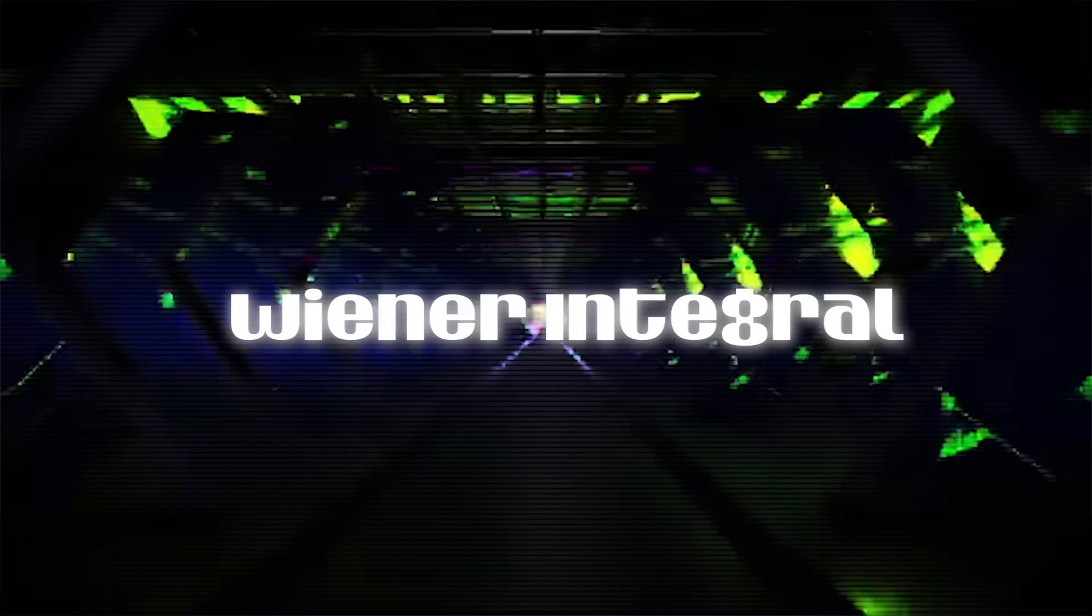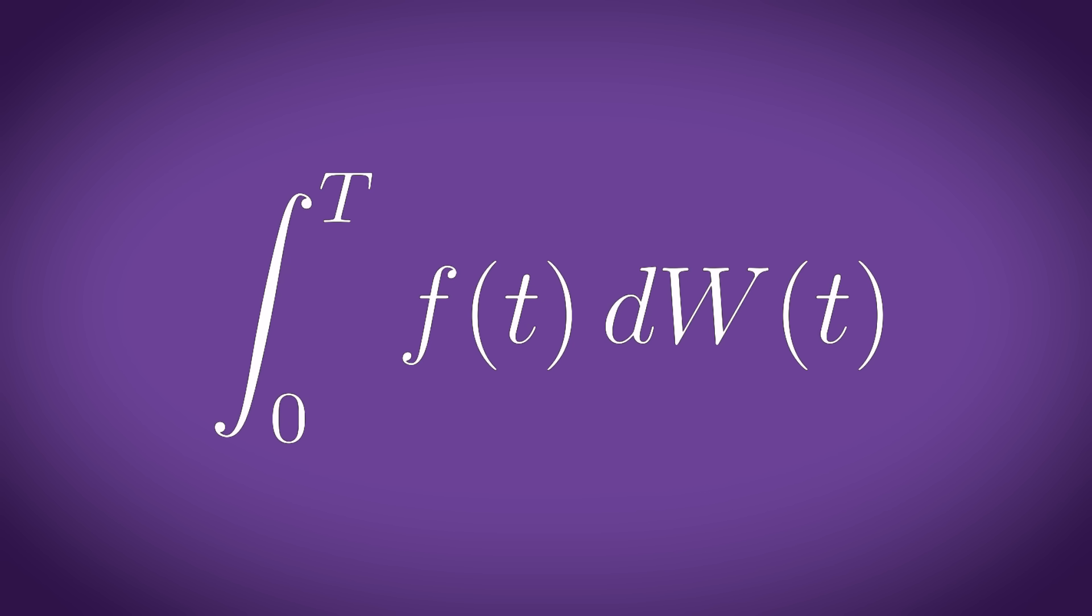19. Wiener integral. Named after Norbert Wiener, a man who was definitely never bullied in school, this is used in probability theory, particularly when dealing with Brownian motion and stochastic processes.